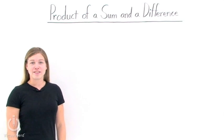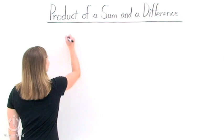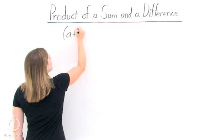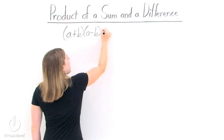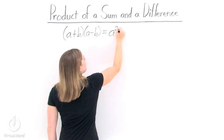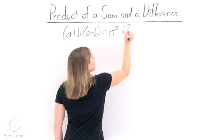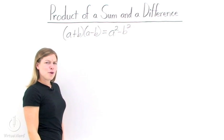The formula for the product of a sum and a difference looks like this. We have a plus b times a minus b, and that's equal to a squared minus b squared. But how did I get that formula?